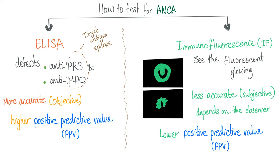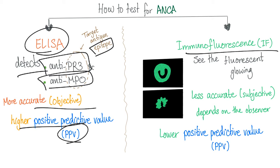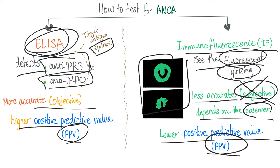How to test for ANCA? We have the ELISA method and the immunofluorescence method. ELISA is superior because it's more objective — it detects the antibodies in the plasma. Either you have the antibodies or you don't. It has a higher positive predictive value, meaning the probability of having the disease if the test is positive. Immunofluorescence is less accurate and more subjective — it depends on the pathologist or observer. Like ultrasound, results depend heavily on operator skill.